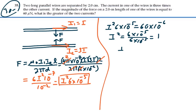Or I is equal to the square root of 1 which is 1. So our current I is 1 amp.